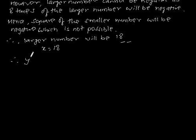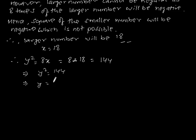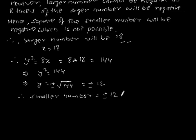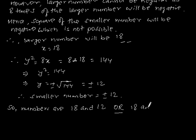Using y square is equal to 8x, this will give 8 into 18 which is equal to 144. y square is equal to 144, which implies y is equal to plus or minus square root of 144, which is equal to plus or minus 12. Therefore, the smaller number is equal to plus or minus 12, so the numbers are 18 and 12 or 18 and minus 12.